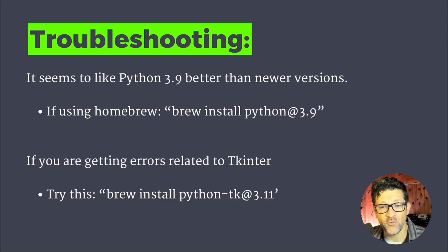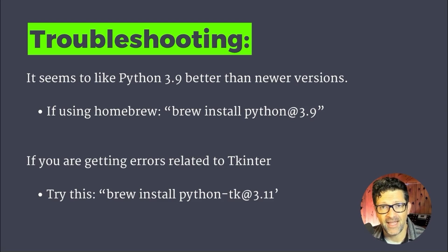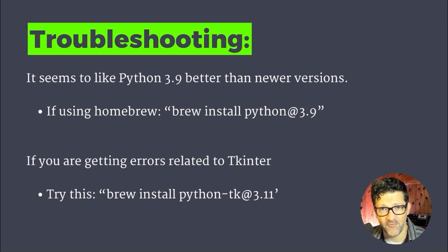For me, it seems that Python 3.9 worked better than newer versions. I experimented with using Python 3.11. And for some reason — maybe it was just me — but I felt like 3.9 worked a lot better. The command for that, 'brew install python3.9', can be very helpful. I'm running this on a Mac and using Homebrew.